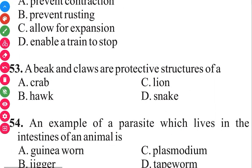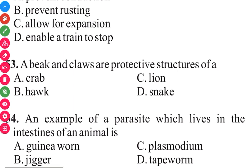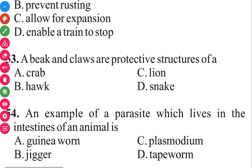Question 54. An example of a parasite which lives in the intestine of an animal is tapeworm. The answer in 3, 2, 1 is D, tapeworm.